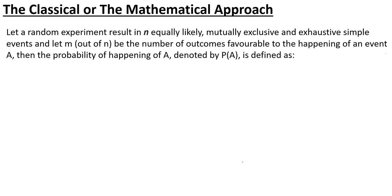We will start with the classical or the mathematical approach. Let us define the basics. What is a random experiment? A random experiment is one in which no outcome can be predicted in advance. The result must be equally likely — meaning each outcome has an equal chance — mutually exclusive, meaning no two events have anything in common, and exhaustive simple events. Exhaustive means when we collect all events, we get our whole sample space. For simple events, there is a single outcome in every event.